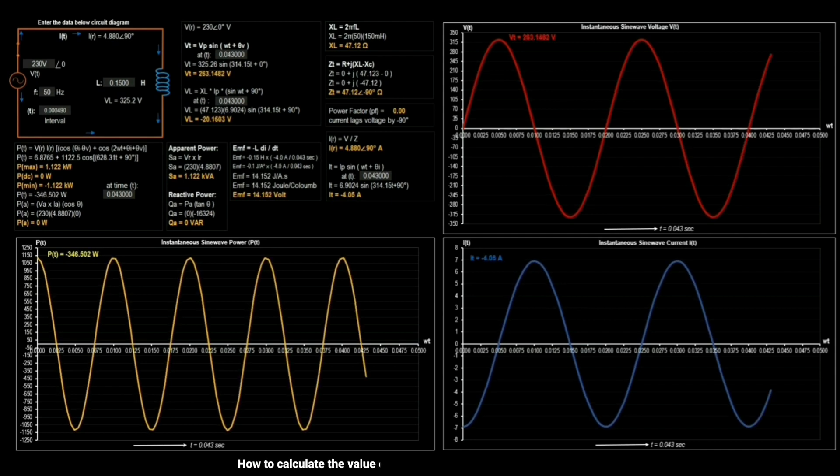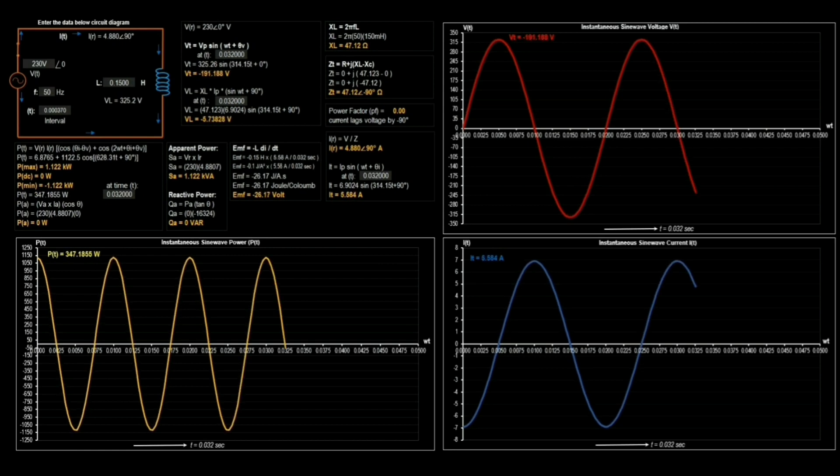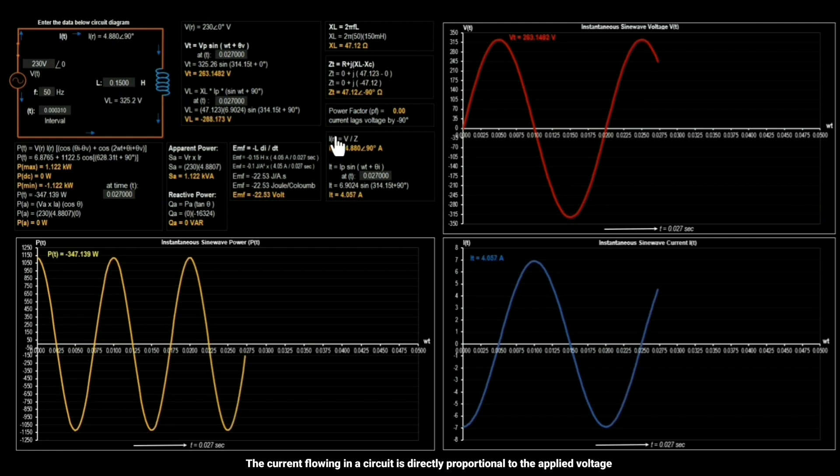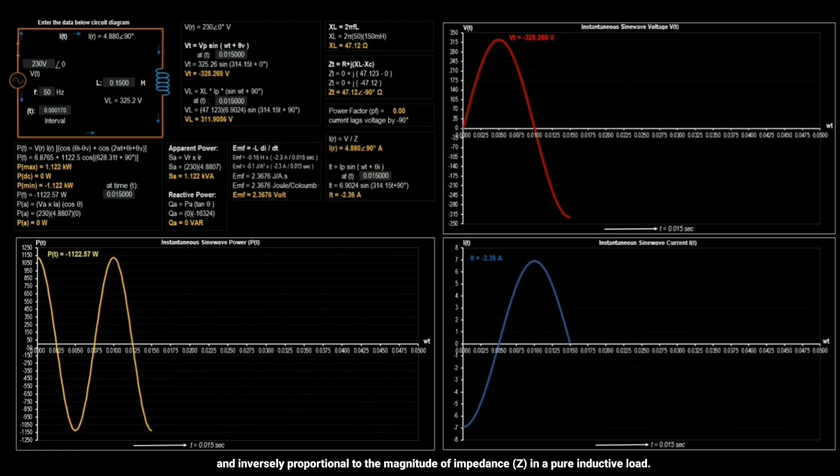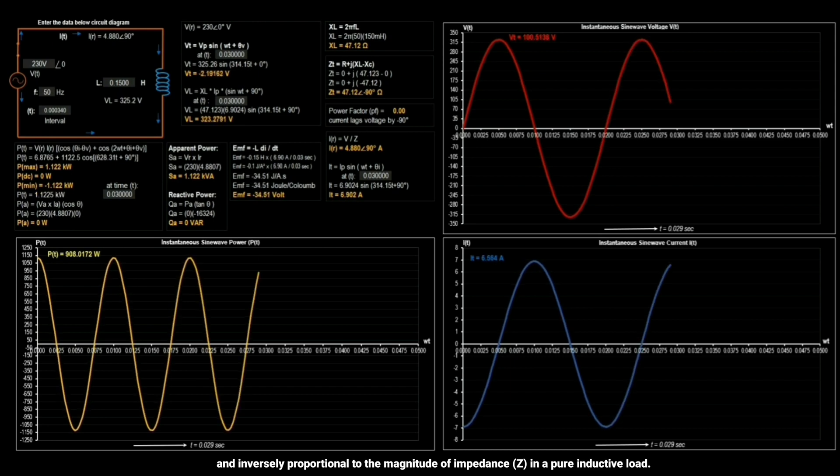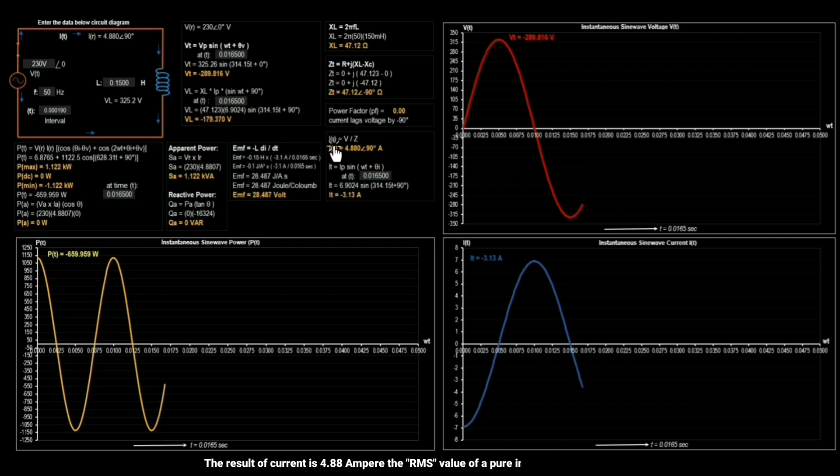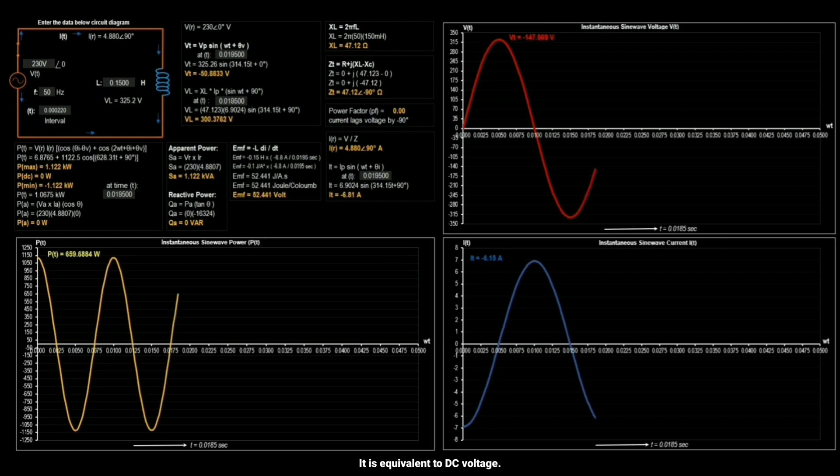How to calculate the value of current in a pure inductance circuit? The current flowing in a circuit is directly proportional to the applied voltage and inversely proportional to the magnitude of impedance in a pure inductive load. The result of current is 4.88 ampere the root mean square value of a pure inductance in AC circuit. It is equivalent to DC voltage.